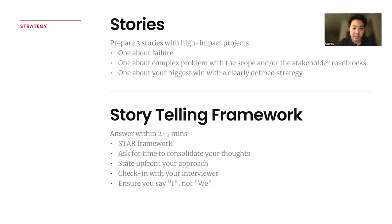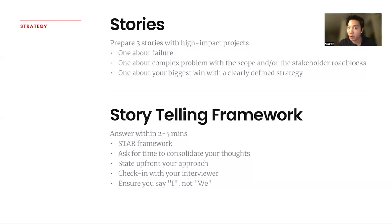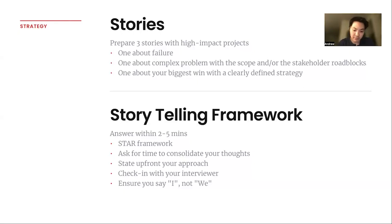STAR stands for Situation, Task, Action, and Result. Situation is about setting context to frame the specific problem you encountered. Task is about what goal you were trying to achieve. Action covers the solutions you derived to move things forward. Results are simply the end outcome of the story — ideally tied back to a metric-based outcome if you can.